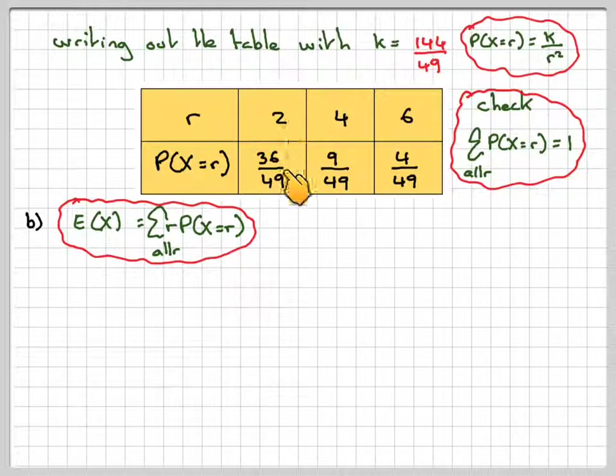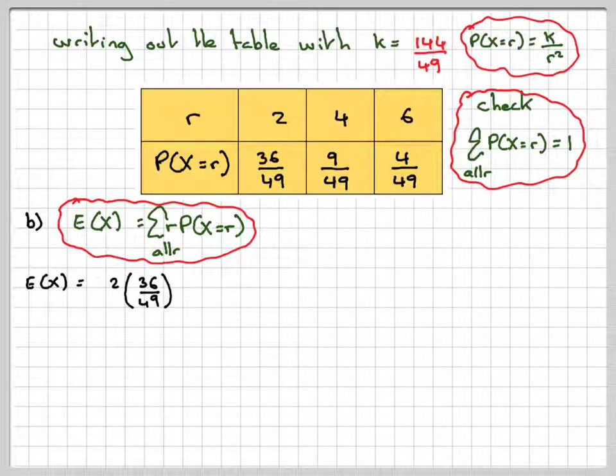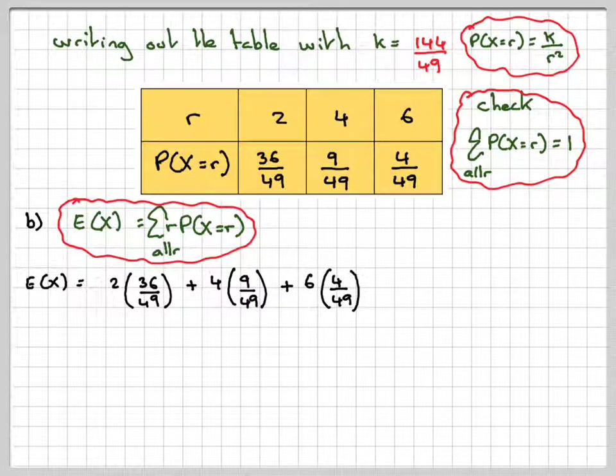So basically, I've got to do 2 times 36/49 plus 4 times 9/49 plus 6 times 4/49. So E(X), 2 times 36/49 plus 4 times 9/49 plus 6 times 4/49.